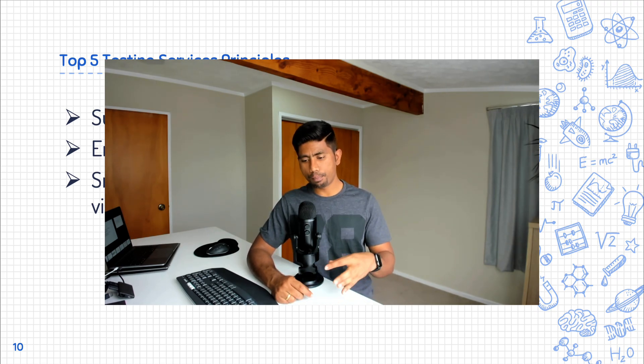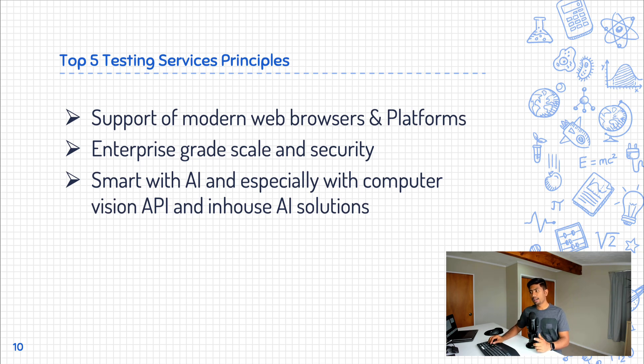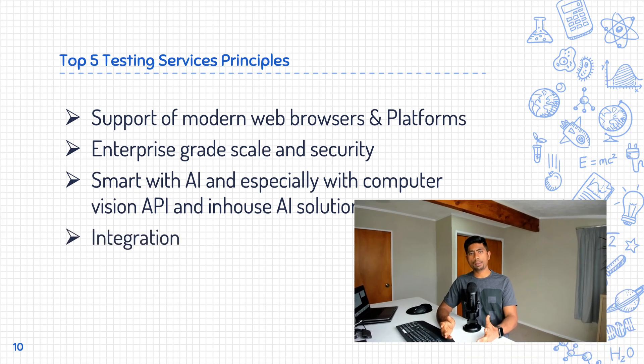The third principle is being smart with AI — especially computer vision APIs and in-house AI solutions. The most important pitch from services companies recently was the auto-healing capability: it automatically heals your UI and fixes problems caused by developer changes to the UI. Companies like Test Project, Applitools, and Testim brought those auto-healing changes pretty fast. The power of AI is slowly and steadily getting into products, and pretty soon smart AI is going to be introduced in all testing services — a huge benefit compared to standalone tools like Playwright, Cypress, or Selenium.